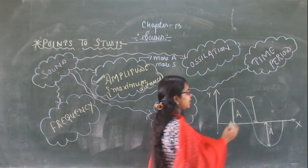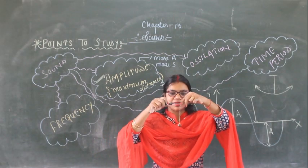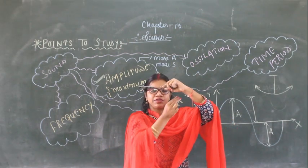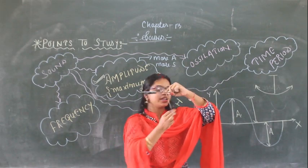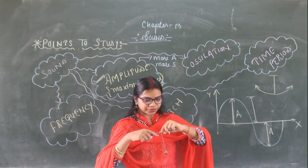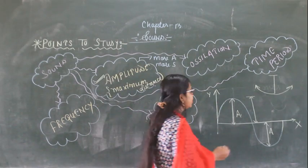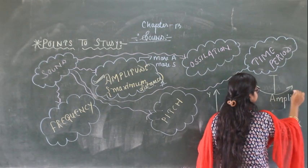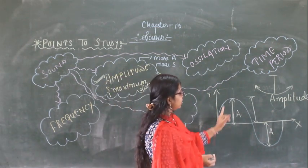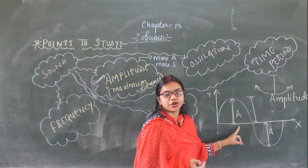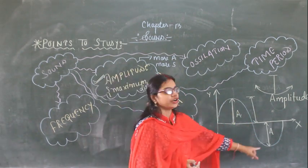In oscillation, the pendulum or the bob has a mean point here. If it moves from one point to another, from the highest point to the lower point, that is known as the amplitude. From the highest point to the lower point - this is known as the amplitude of that vibrating body.